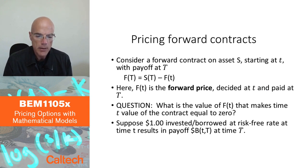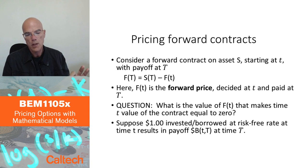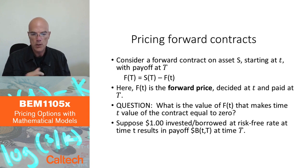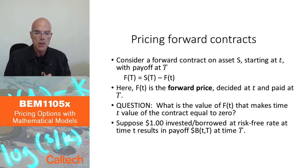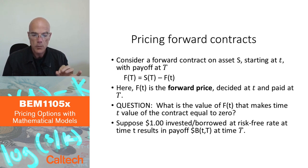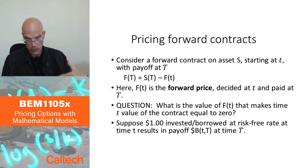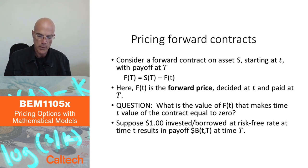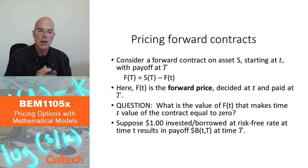Forward contracts, when you enter them today at time t, involve no exchange of money at initiation. The buyer and seller don't exchange any funds at the initial time — there is only a payoff, positive or negative, at capital T. So the question is: what value of F(t) would make the contract's value equal to zero when we enter it? We want that because in a forward contract there is no exchange of money today.